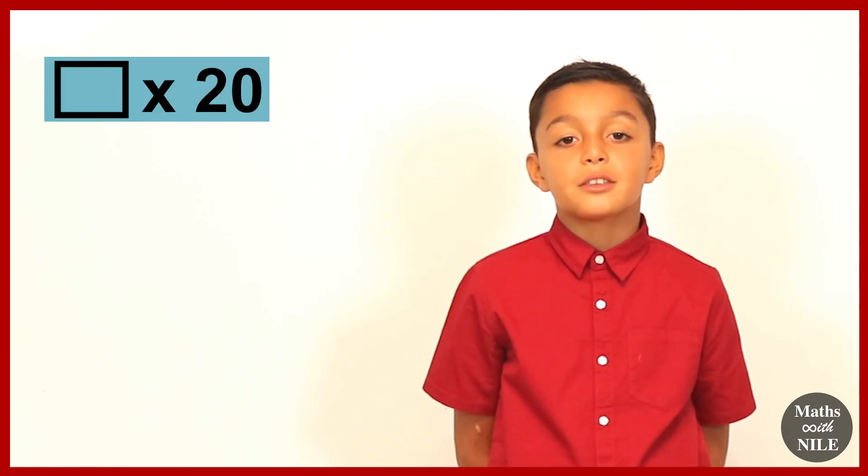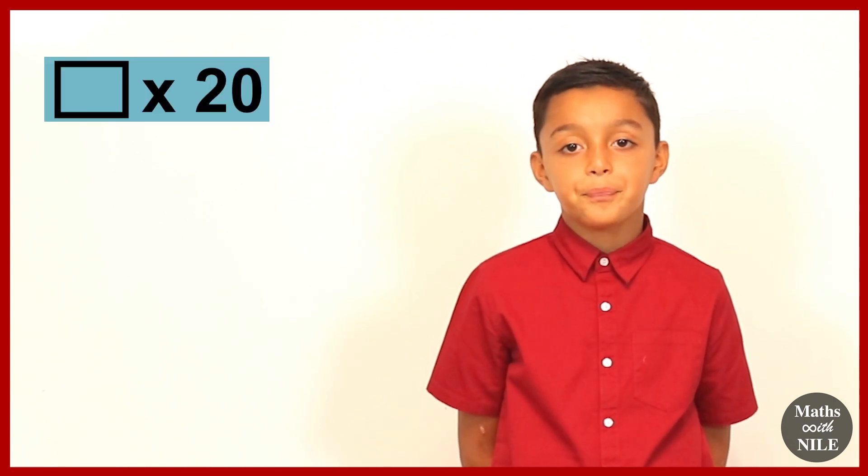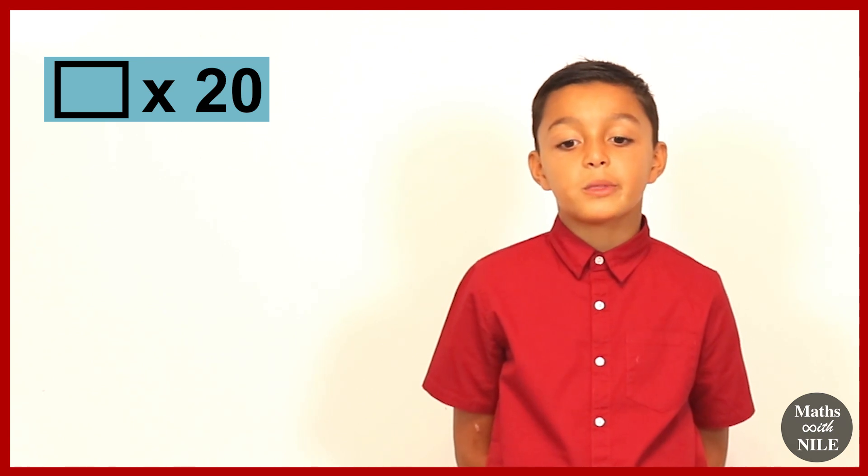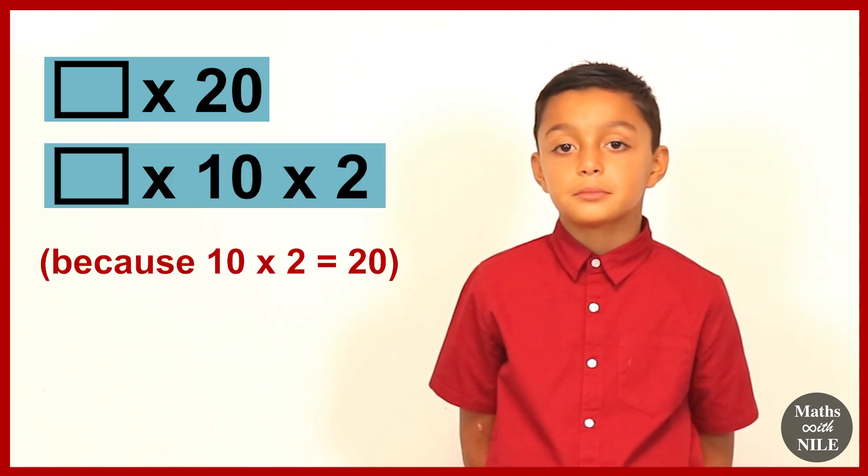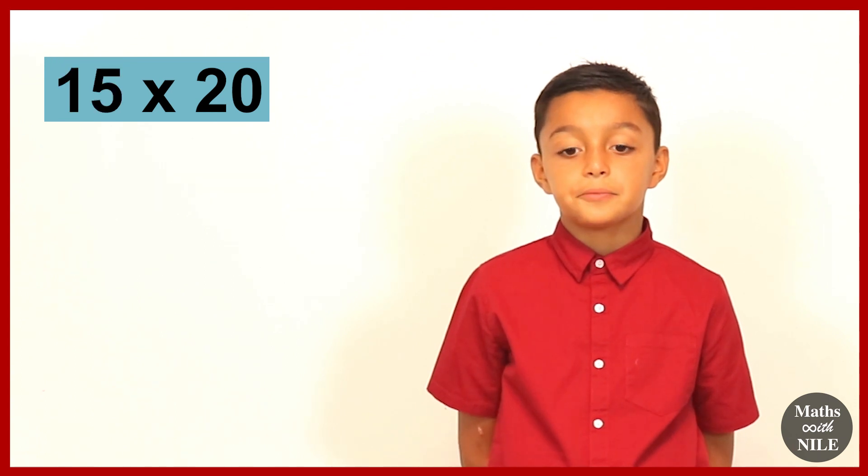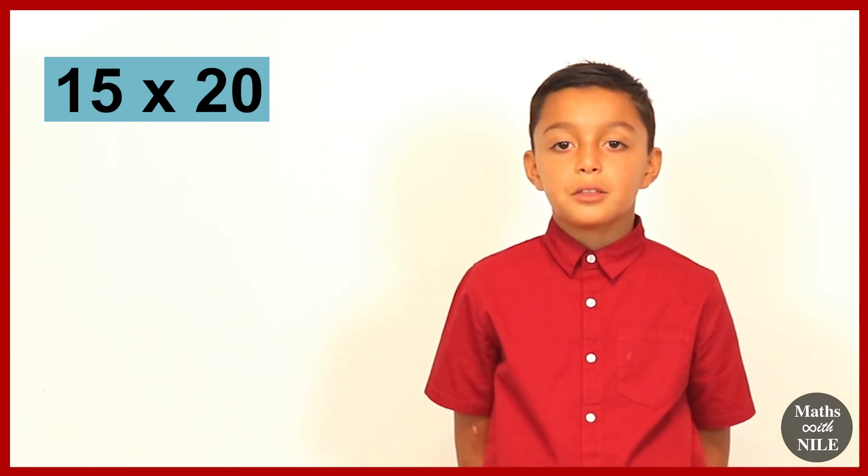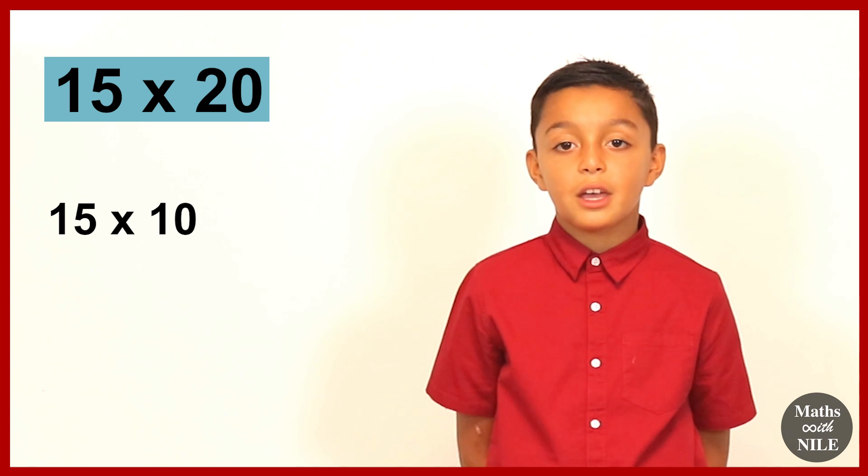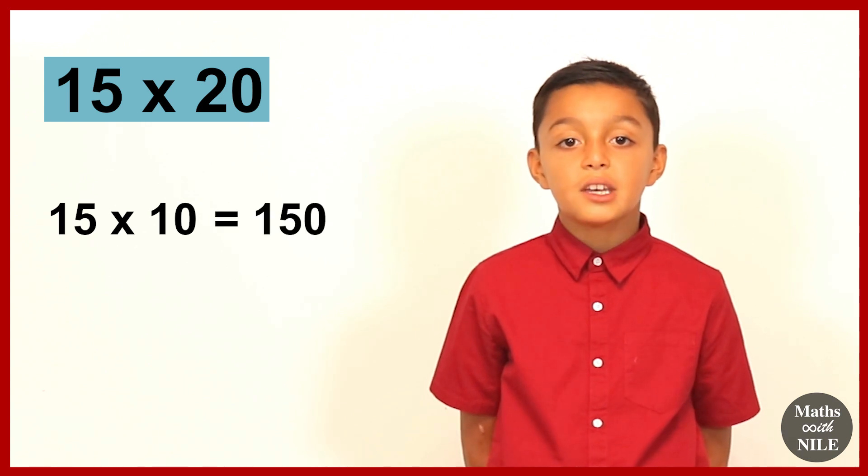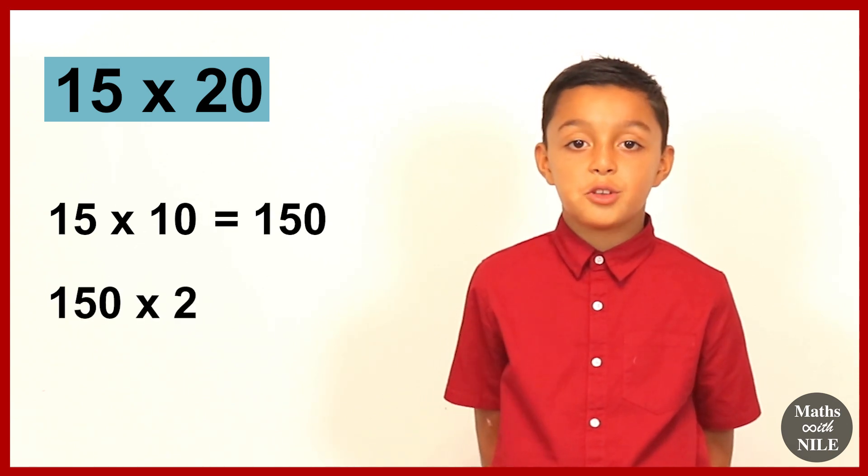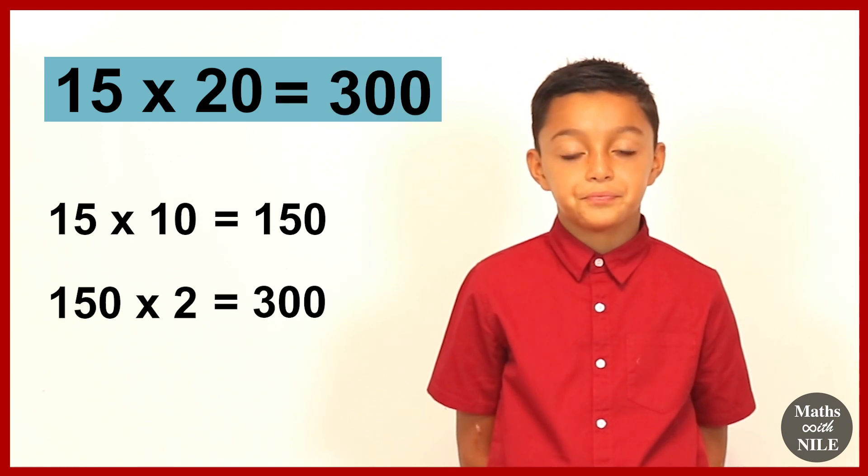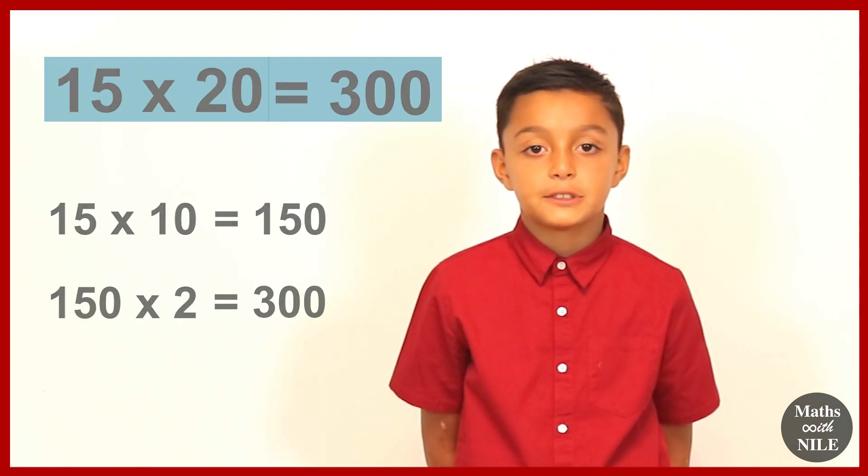So what happens if we times a number by 20, Niall? So we can times it by 10, and then we can times it by 2. Okay, so let's look at 15 times 20. So we'll do 15 times 10, which is 150. And then 150 times 2 is 300. So 15 times 20 is 300.